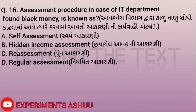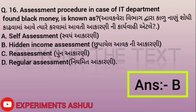Last question: The assessment procedure in case the IT department finds black money is known as what? When the IT department finds black money, the assessment procedure used is hidden income assessment. So the answer is B, hidden income assessment.